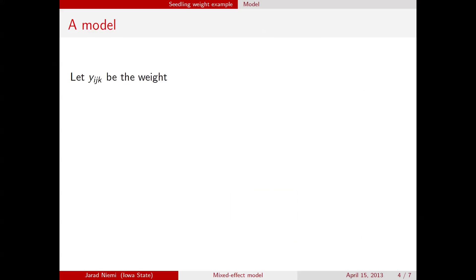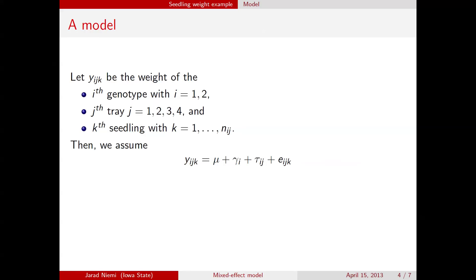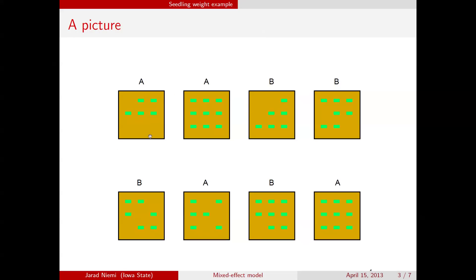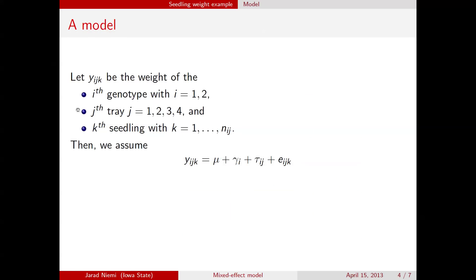We're going to introduce the model — at least one way to write it. We introduce notation where y_ijk is the weight of the i-th genotype, j-th tray within that genotype, k-th seedling within that genotype-tray combination. So i refers to the genotype (A or B), j refers to the tray within that genotype (four trays each), and k is the seedling within the genotype-tray combination, with N_ij seedlings per tray. For example, N_ij for the first tray would be five, or nine for a full tray.